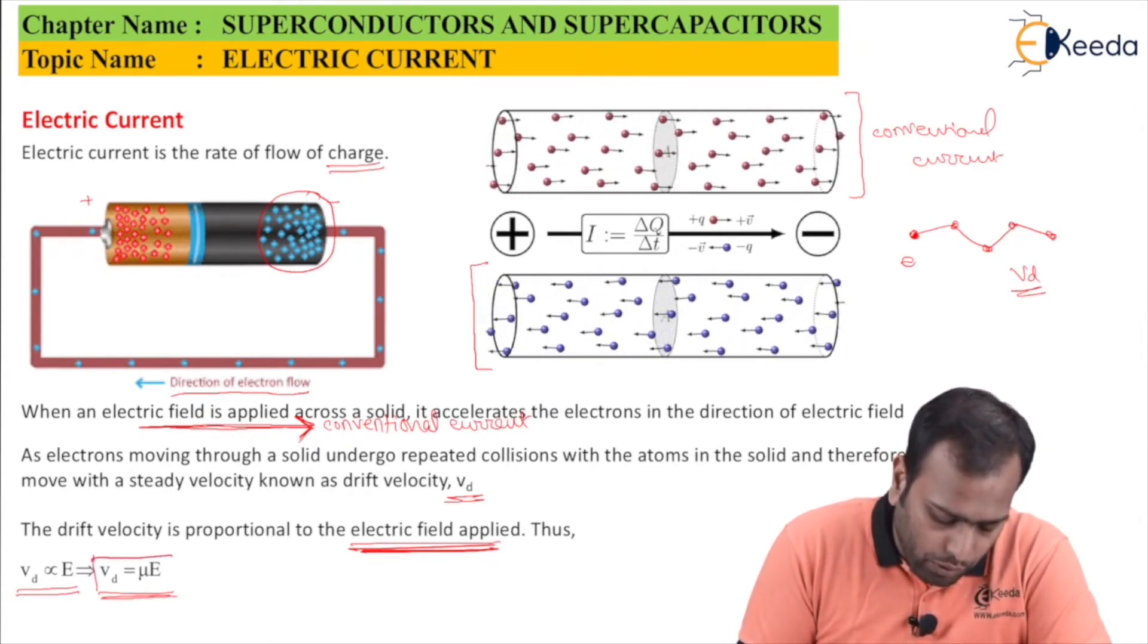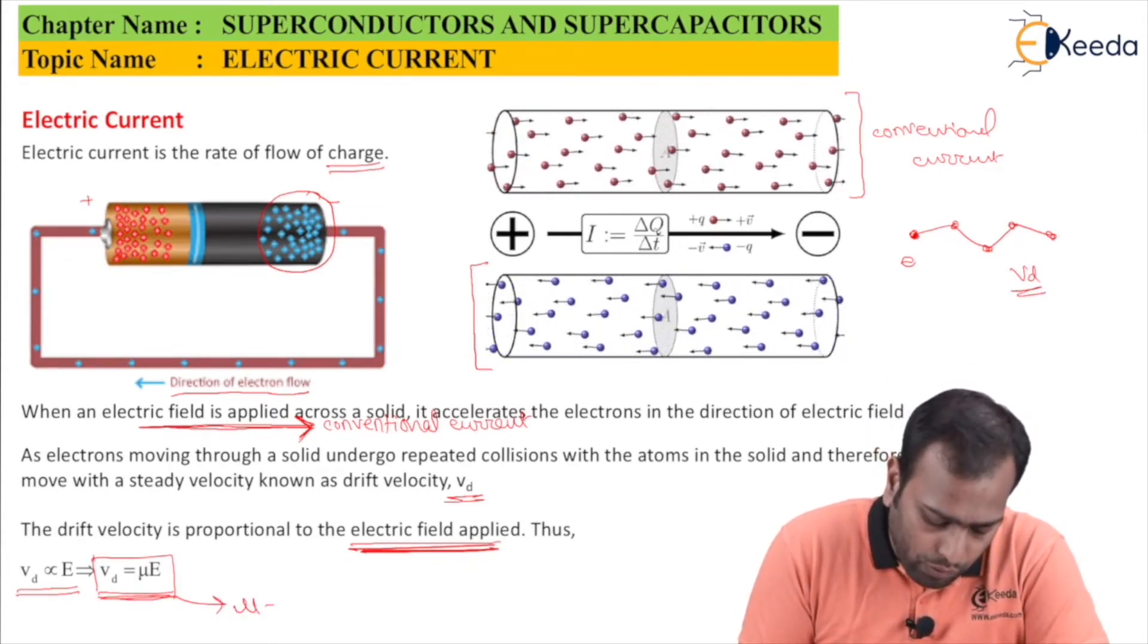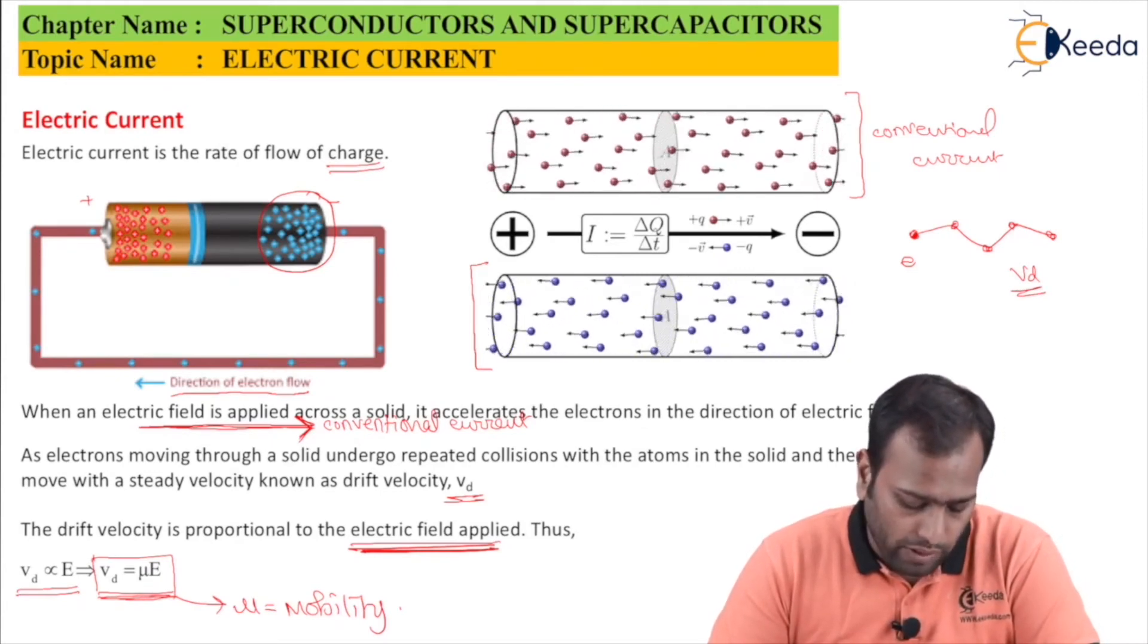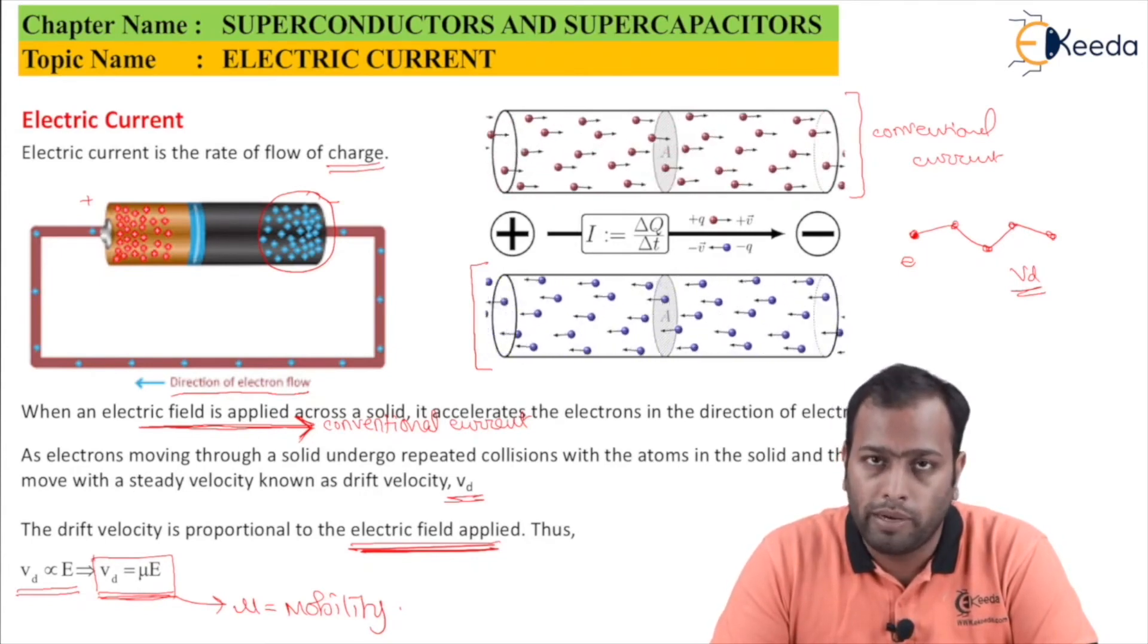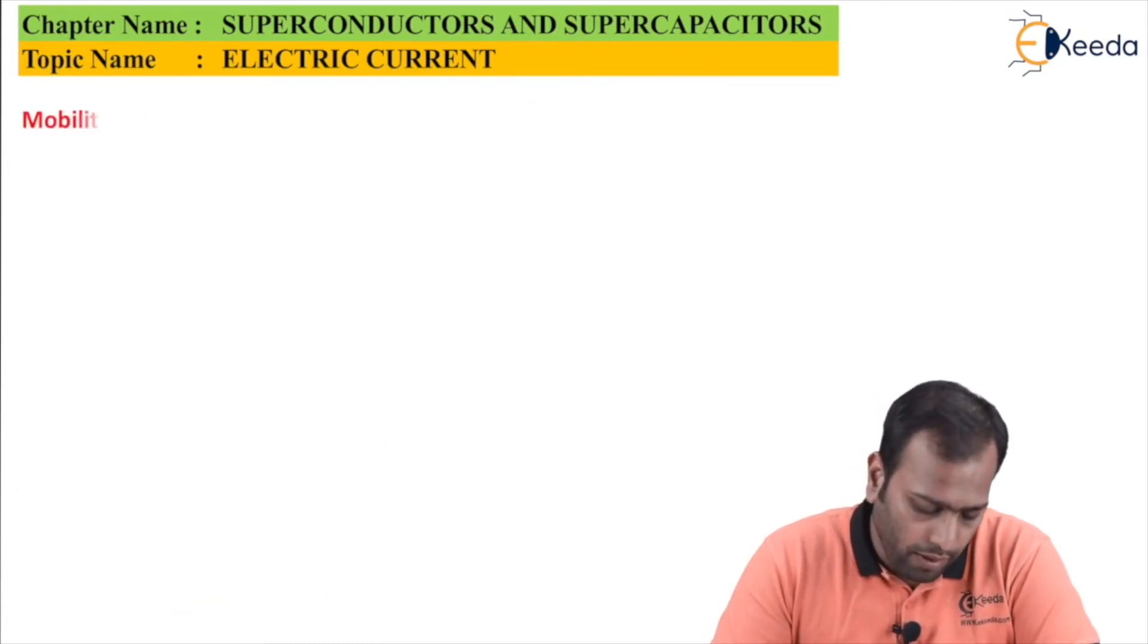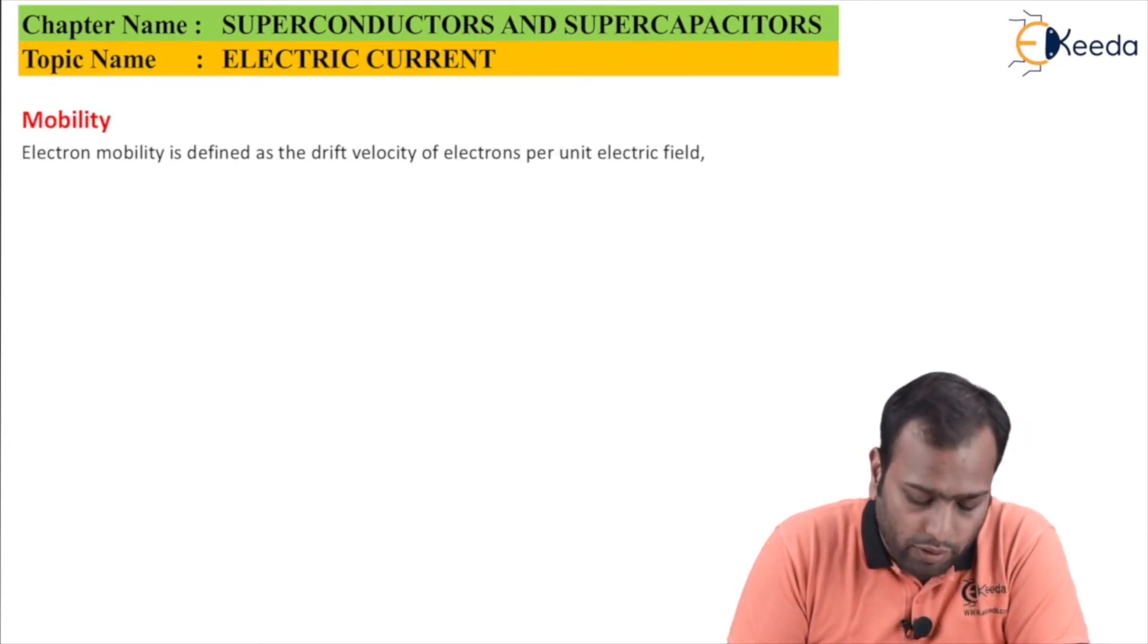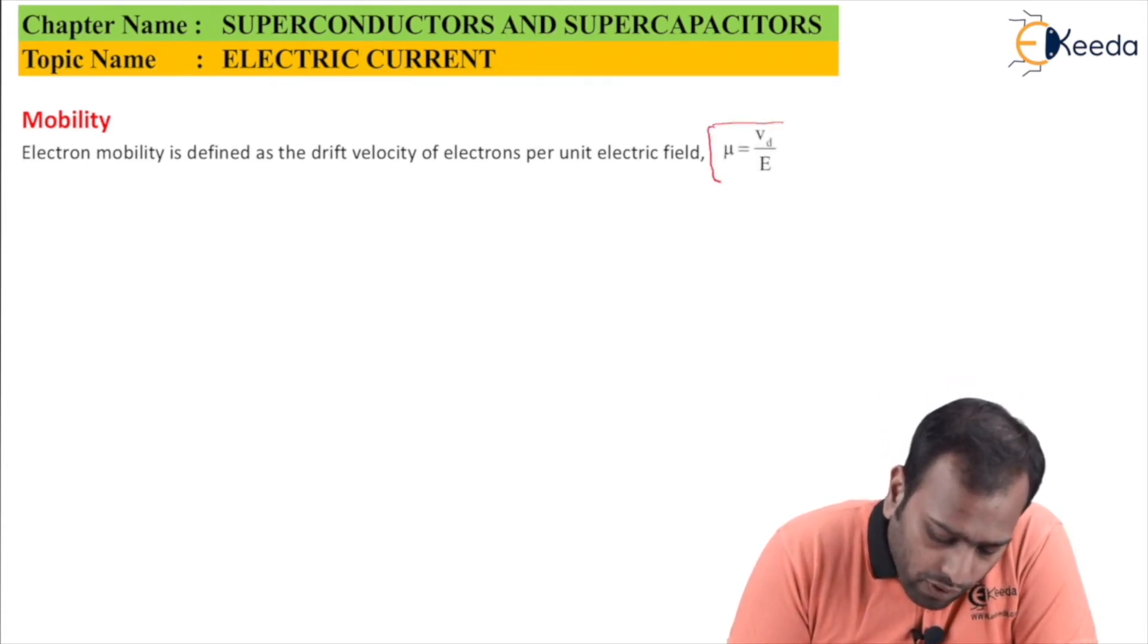We are talking about electrons, so it becomes mobility of electrons represented as mu E. If we're talking about mobility of holes, it becomes mu H or mu T. Electron mobility is defined as the drift velocity of the electrons per unit electric field. This is the formula for mu: drift velocity per unit electric field, or Vd by E.